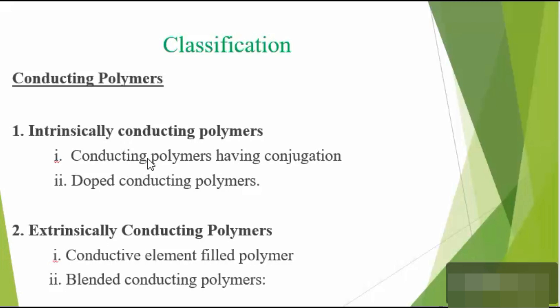The first type, conducting polymers having conjugation, have continuous sp2 hybridized carbon centers in their polymer backbone. That means they have delocalized pi electrons in their polymer backbone. These pi electrons overlap over the entire molecule and form a valence band and conduction band. The conductivity of these polymers is very low because the energy gap between the valence band and conduction band is significant. Because of its low conductivity, its applications are very limited. The conductivity can be increased either by thermal activation or by photolytic activation.